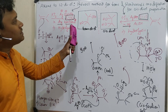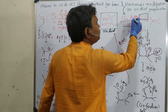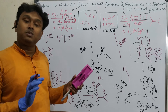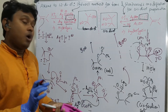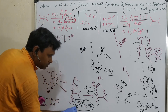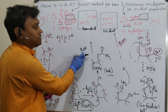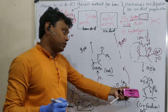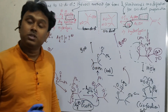This is the overall discussion of the mechanism of the Prevost method and Woodward modification. The key difference is: in Prevost (1:2 ratio), the second equivalent of silver benzoate causes anti-attack and ring opening, giving the trans diol. In Woodward modification (1:1, aqueous conditions), water attacks the electrophilic centre and hydrolyzes to produce the cis diol.